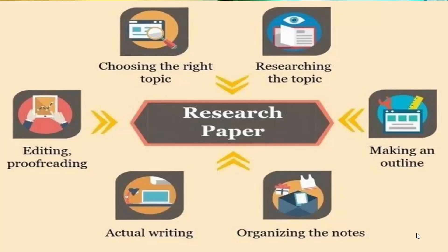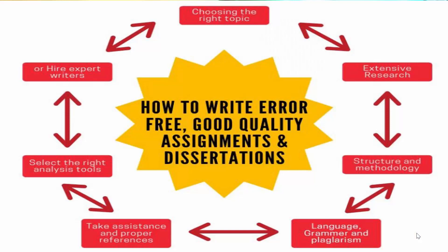How do we write a research paper? Firstly, we choose the right topic, then research about the topic, make outlines, organize the notes, then start to write up, and then do editing and proofreading.